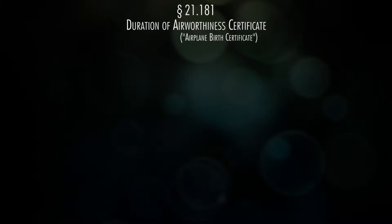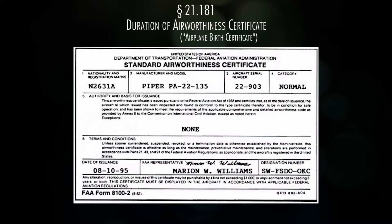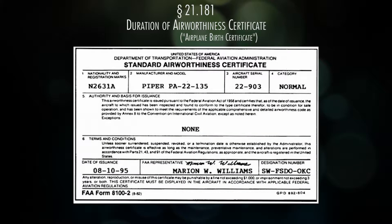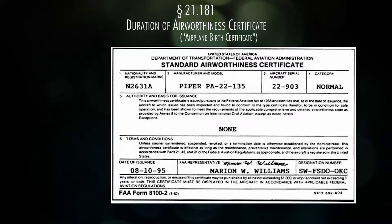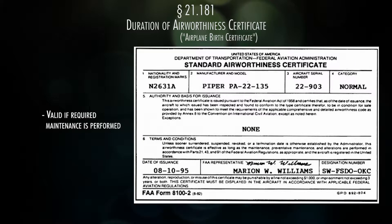Part 21.181 talks about the duration of airworthiness certificates. An airworthiness certificate is something that an airplane gets once it has been made — the FAA says it's a good airplane and it flies. The certificate is valid as long as aircraft maintenance is performed. The FAA doesn't take it away if you don't do maintenance for 20 years, but the airplane is not flyable. You have to do all the required maintenance in order for that certificate to become valid again.